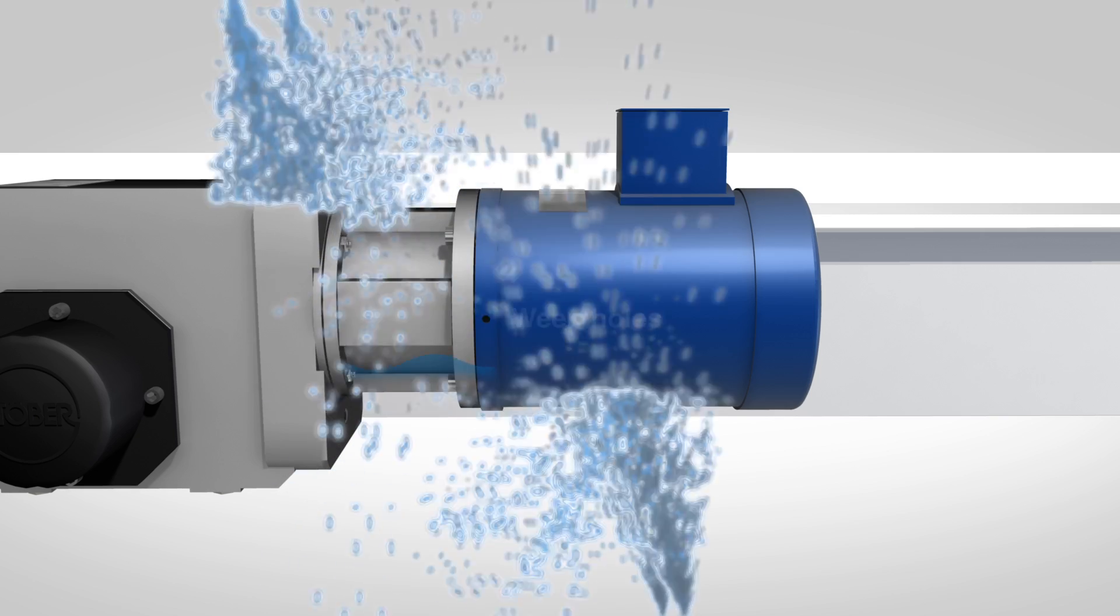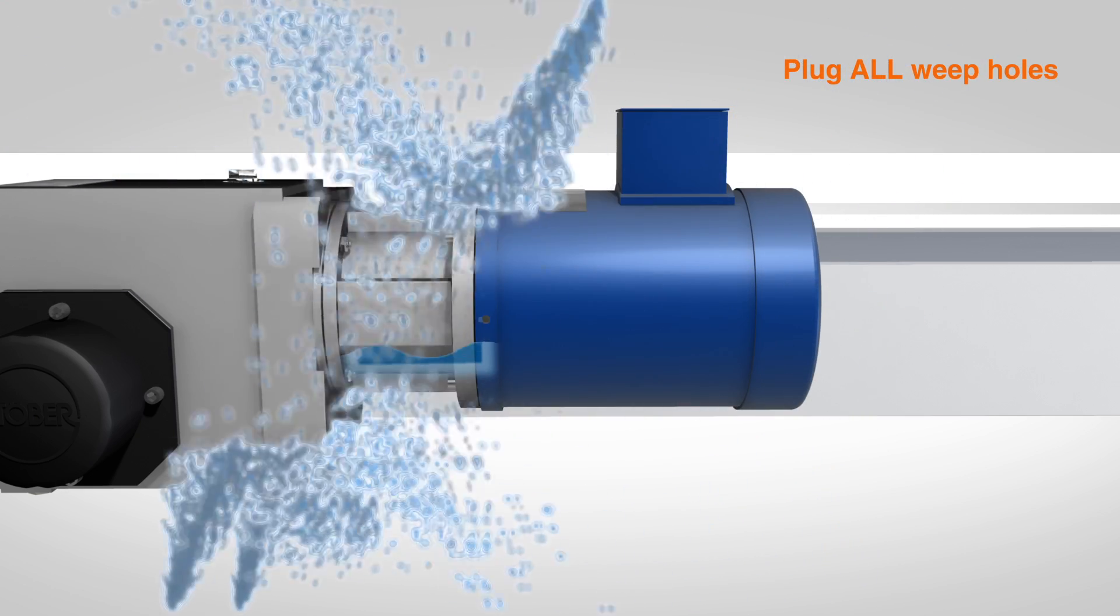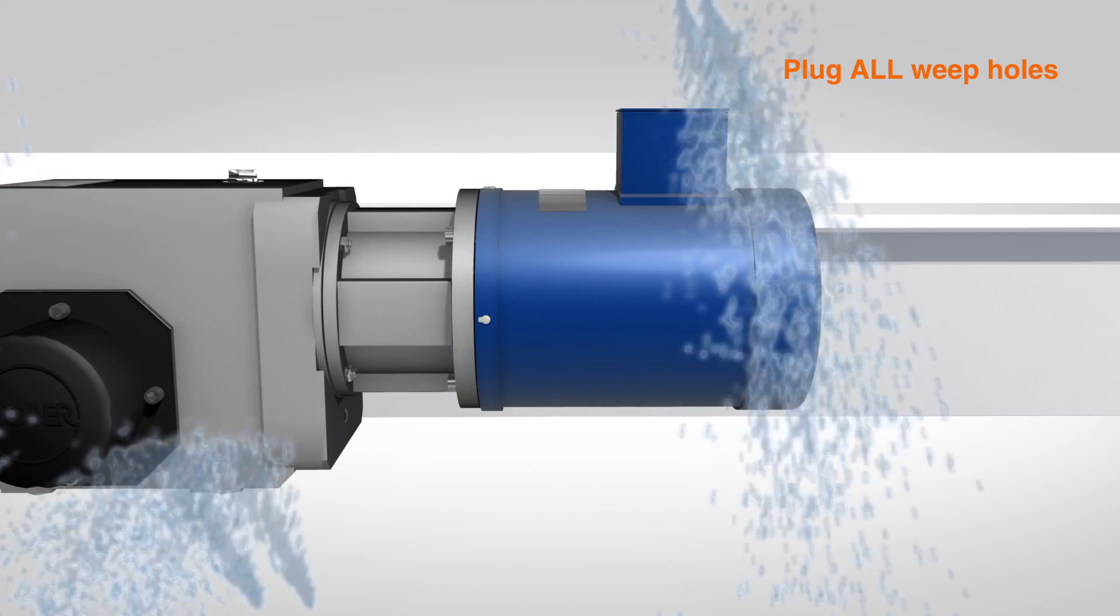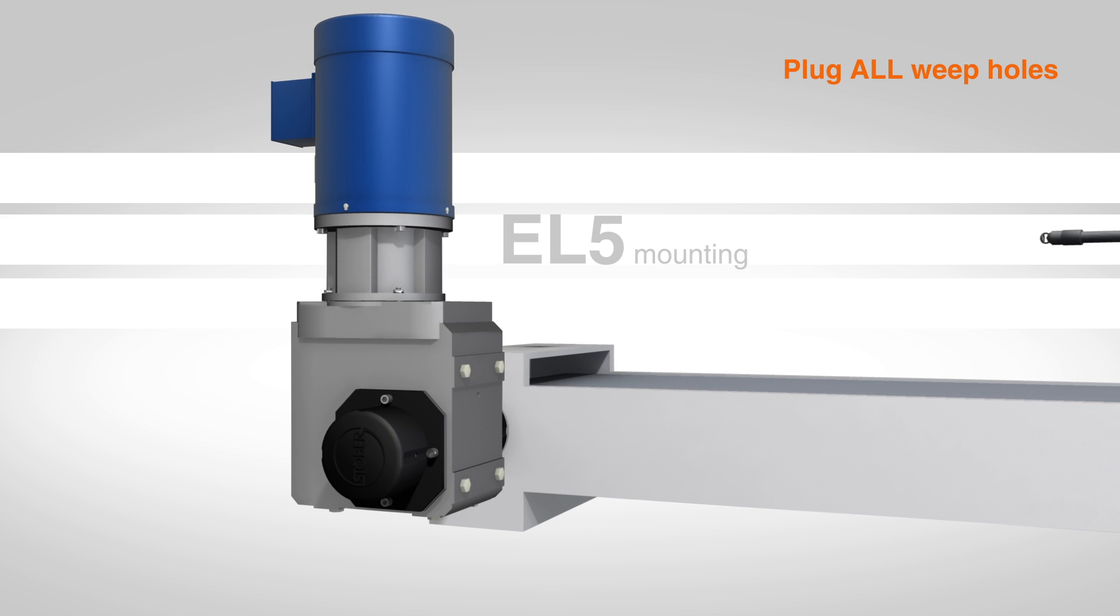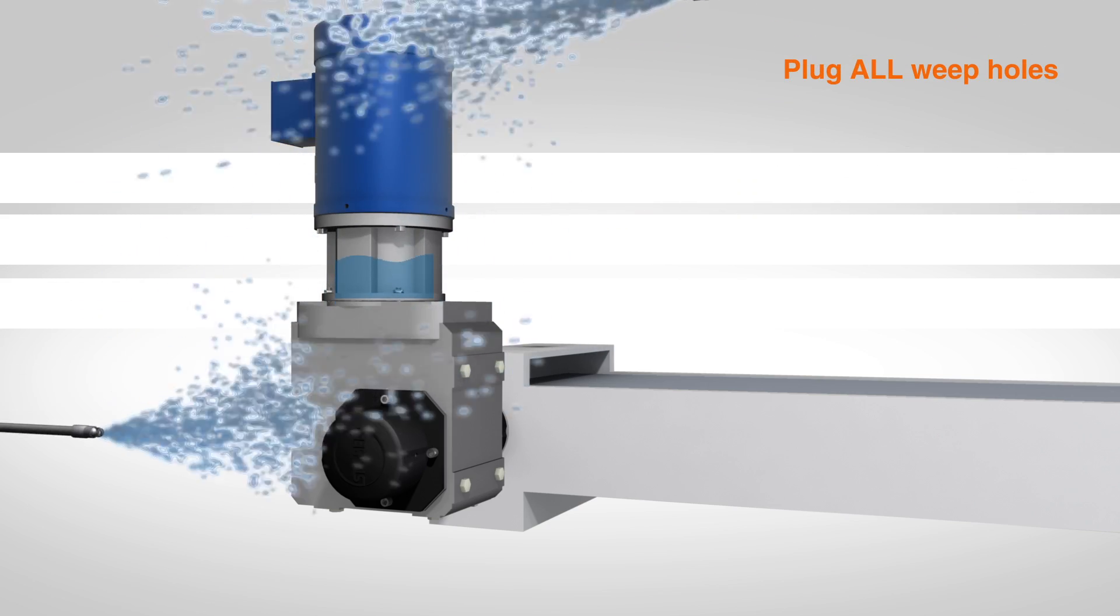Water or other material can enter the reducer through these weep holes and cause the motor adapter bearing to fail. This is important for all mounting positions, especially in EL5 mounting, as the motor adapter cavity can fill with water, significantly reducing gearbox reliability.